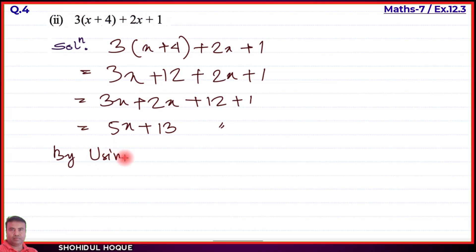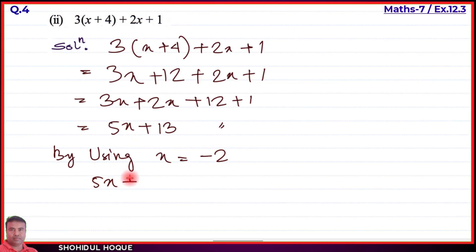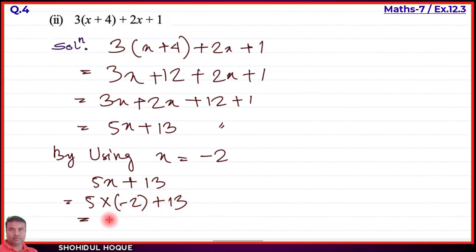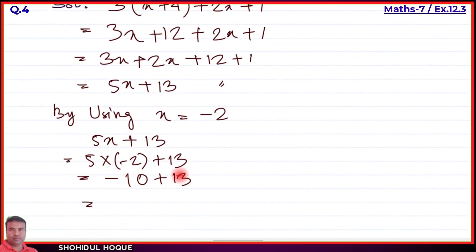By putting x equal to minus two, we get: 5 into minus 2 plus 13. That equals minus 10 plus 13. So 13 minus 10 equals 3. The answer is 3.